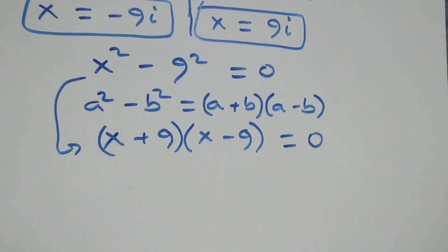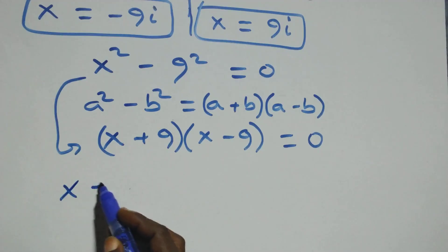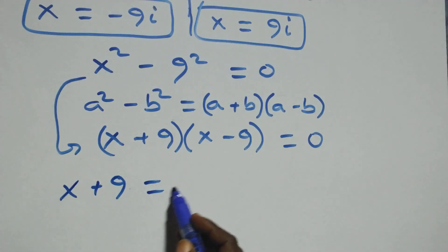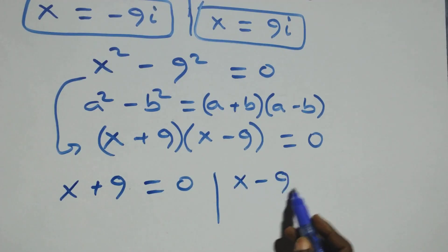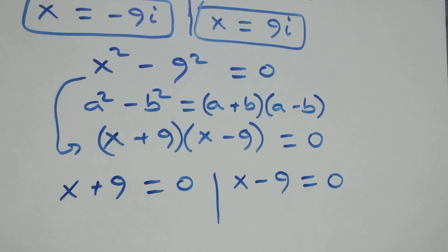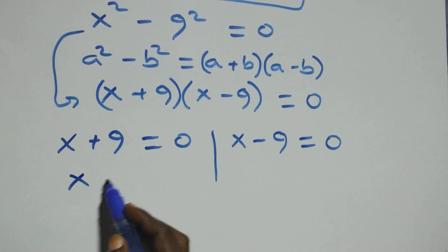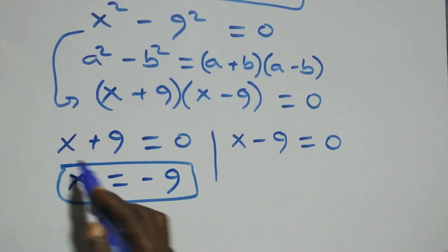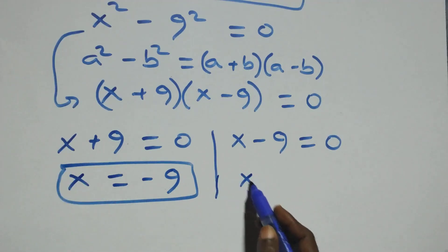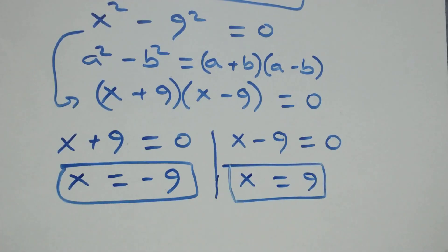We have two possible cases here: x + 9 = 0 or x − 9 = 0. From the first, x = −9, which is a real solution. From the second, x = 9, which is also a real solution.